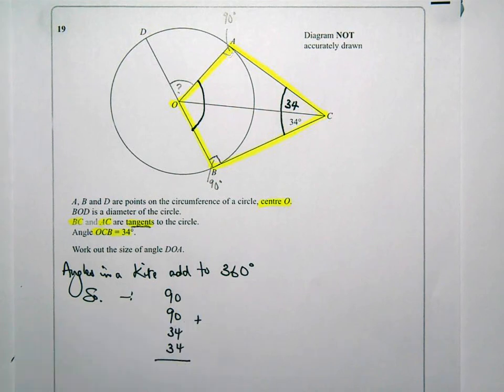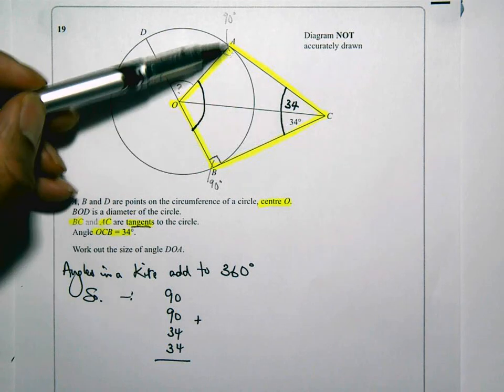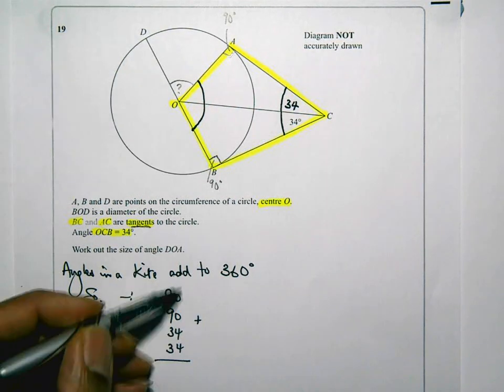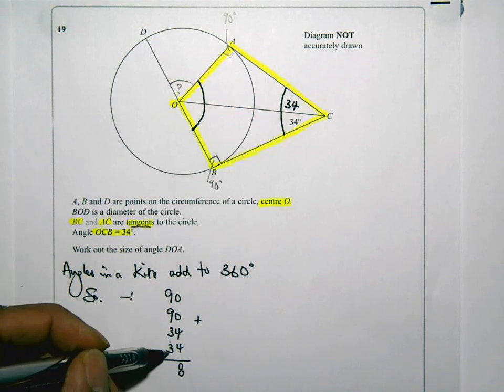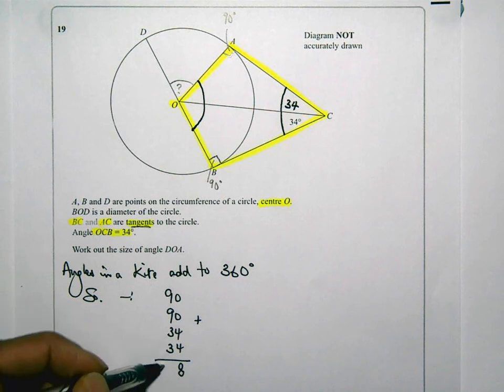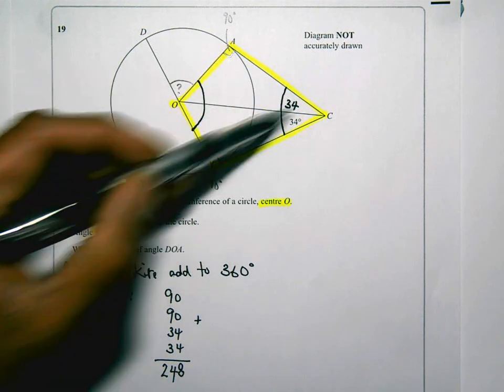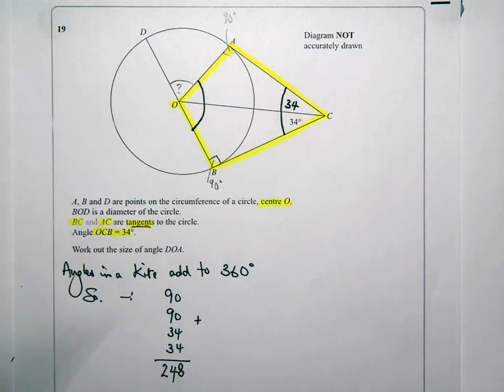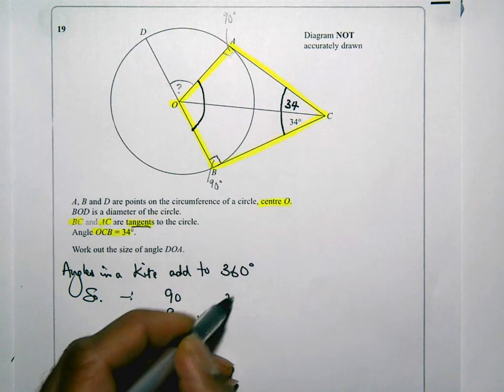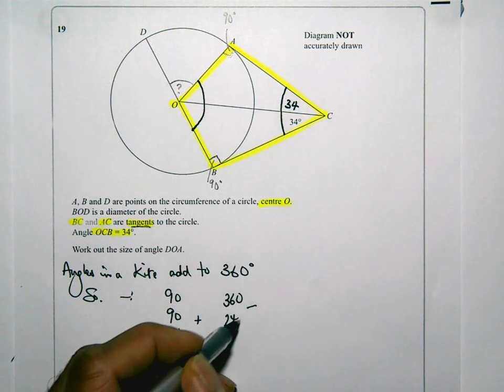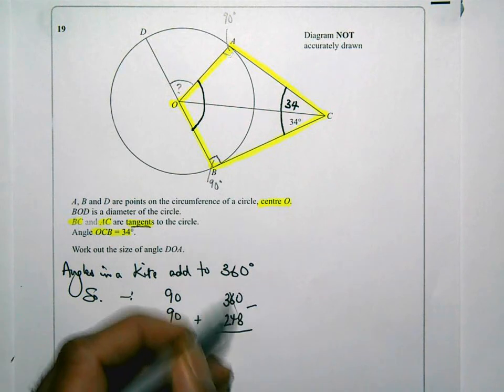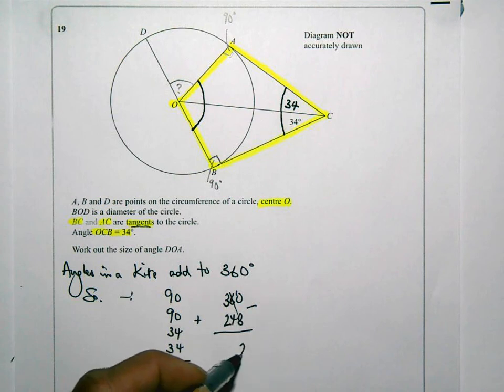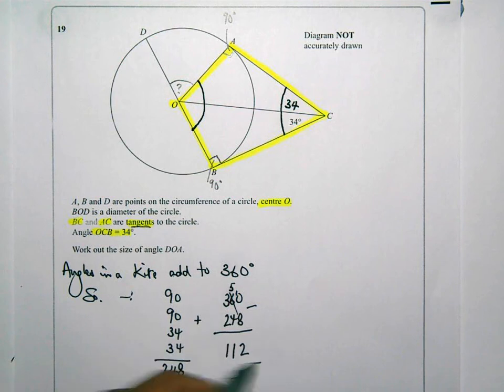Okay, so that's 34, that's 34, that's 90, that's 90. That's going to be 8. 9 and 9 is 18, 18 and 3 is 21, 21 and 3 is 24. So that means all of those angles there, that plus that plus that is 248. So I'm going to do 360 take away 248. And that is going to give me, so 10 take away 8 is 2, 5 take away 4 is 1, and 3 take away 2 is 1, 112 degrees.